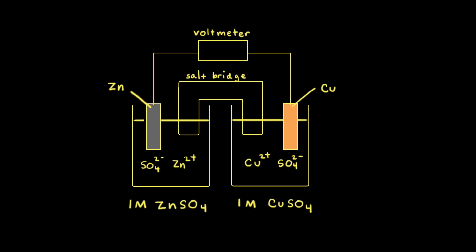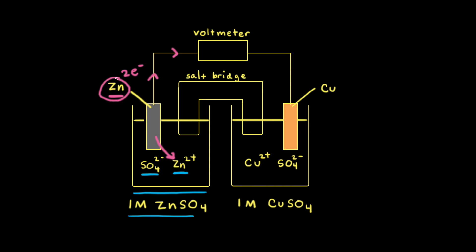Now that we've gone over the half reactions for this zinc-copper galvanic or voltaic cell, let's look at a diagram and see how things actually work. The compartment on the left is a beaker containing a one molar aqueous solution of zinc sulfate, so there are zinc two plus ions and sulfate anions in solution. Solid zinc is oxidized and turns into zinc two plus cations, losing two electrons that move through the wire. This piece of solid zinc is called an electrode, and the electrode at which oxidation takes place is called the anode.